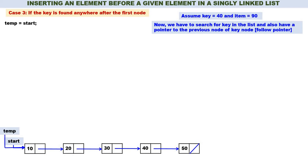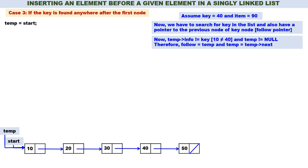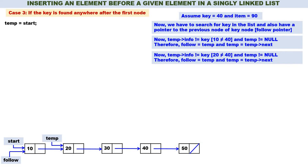We set temp = start, so temp points to node 10. Temp->info is 10 and key is 40 — they are not equal, and temp is not null. Since temp->info != key and temp != null, we set follow = temp and temp = temp->next. Now temp points to node 20. Temp->info is 20, key is 40 — not equal, and temp is not null. So again follow = temp and temp = temp->next.